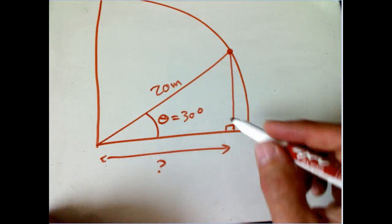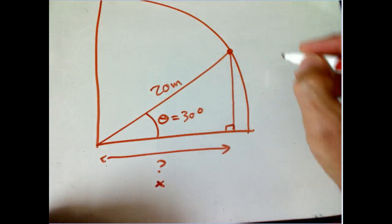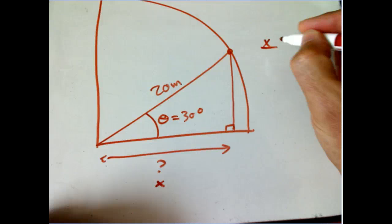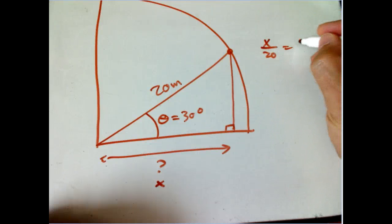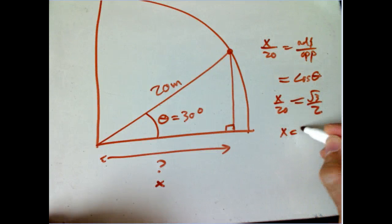There's a couple ways to do it, but they're all equivalent. If that's x, then I know that x over 20, that's the adjacent over hypotenuse, equals cosine of theta. We know cosine of 30 degrees is root 3 over 2. So x is just 20 times root 3 over 2, or 10 root 3.